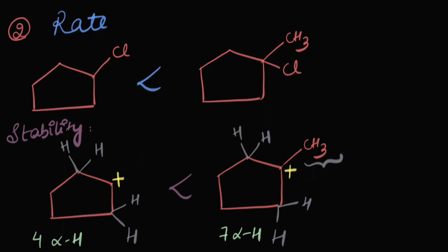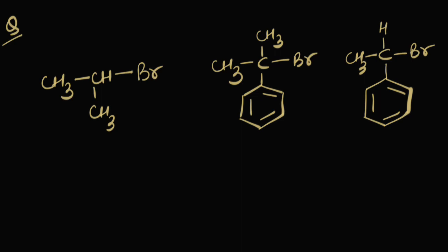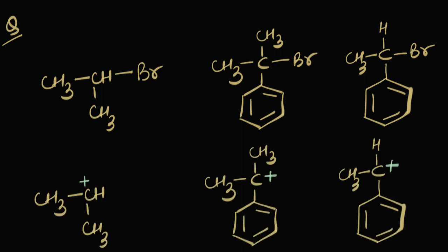Again, more the number of alpha hydrogens, more is the stability, and therefore the second substrate would react faster than the first one in an SN1 reaction. Now let's move on to the last example. I have three substrates, and in each case the leaving group would be Br⁻. So I need to compare the carbocation stability again. In the first case there are six alpha hydrogens, in the second case six again, while in the third case there are three.